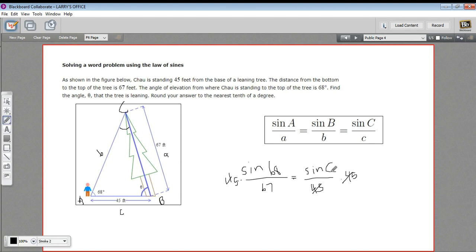So let me pull out my calculator here. So 68 and then I press the sine button. And then I divide that by 67. And I multiply that by 45. And then I punch inverse sine. Aha. And I got 38.5. So C equals 38.5.